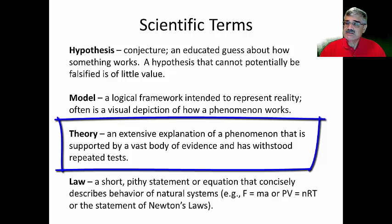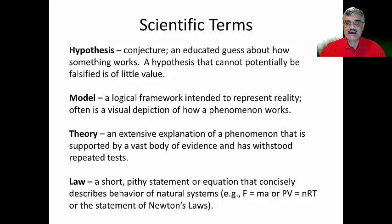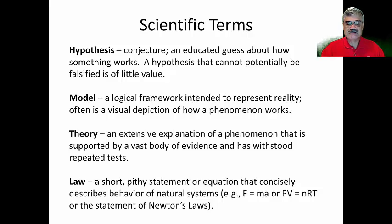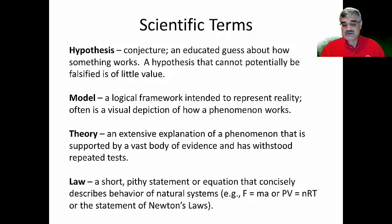A theory is an extensive explanation of a phenomenon or related phenomena that is supported by a vast body of evidence and has withstood repeated challenges or repeated tests. I like to describe a theory as a grand explanation. The fourth term is law — generally a short, pithy statement or an equation that summarizes the behavior of a natural system. For example, F equals MA (force equals mass times acceleration), PV equals NRT, and E equals MC squared. Those would be scientific laws, as would a statement of Newton's laws.